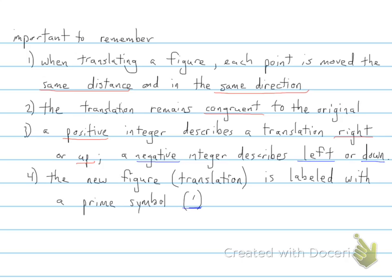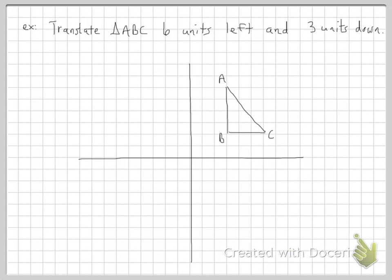And I'll show you what that means with our first example. So the first example says that it wants us to translate triangle ABC, six units left and three units down.